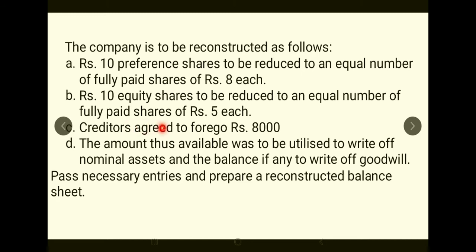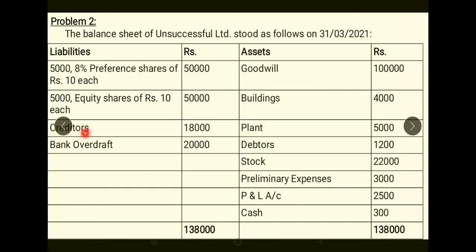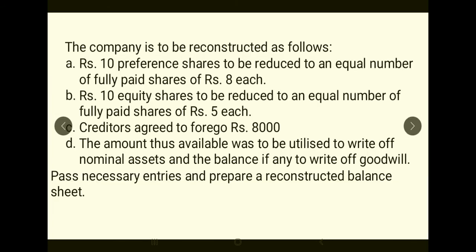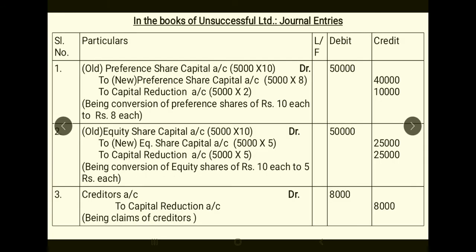Adjustment 3: Creditors agreed to forego Rs.8,000. They are not requiring full payment, so their claim is reduced by Rs.8,000. Journal entry: Creditors Account debit Rs.8,000, to Capital Reduction Account Rs.8,000. This is again a benefit — a liability reduction — transferred directly to Capital Reduction Account.